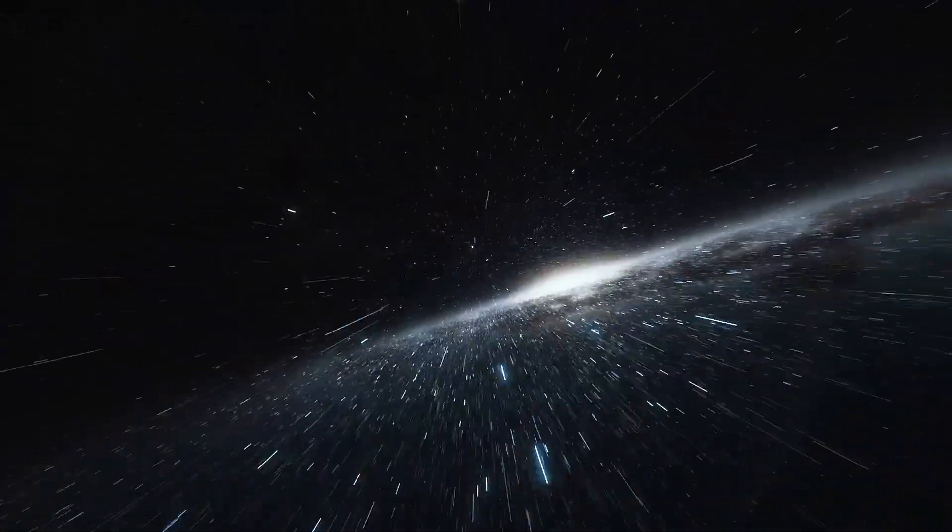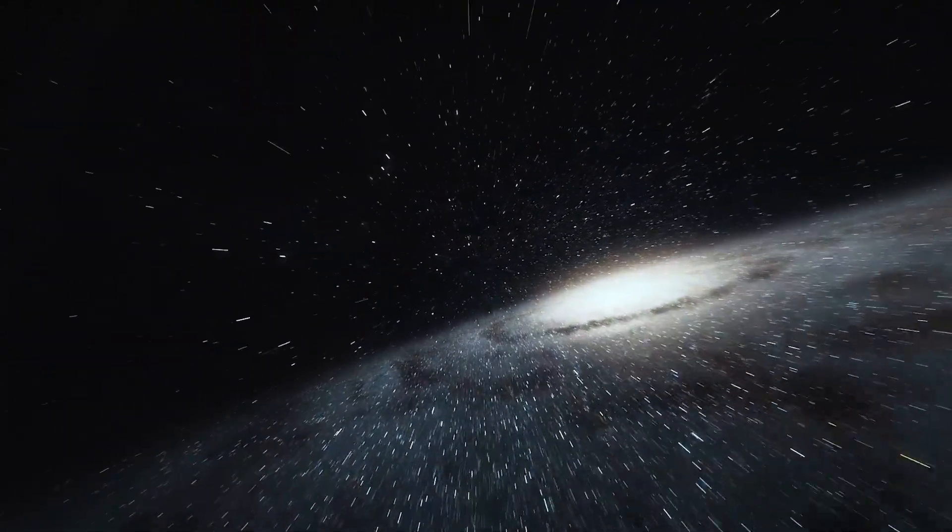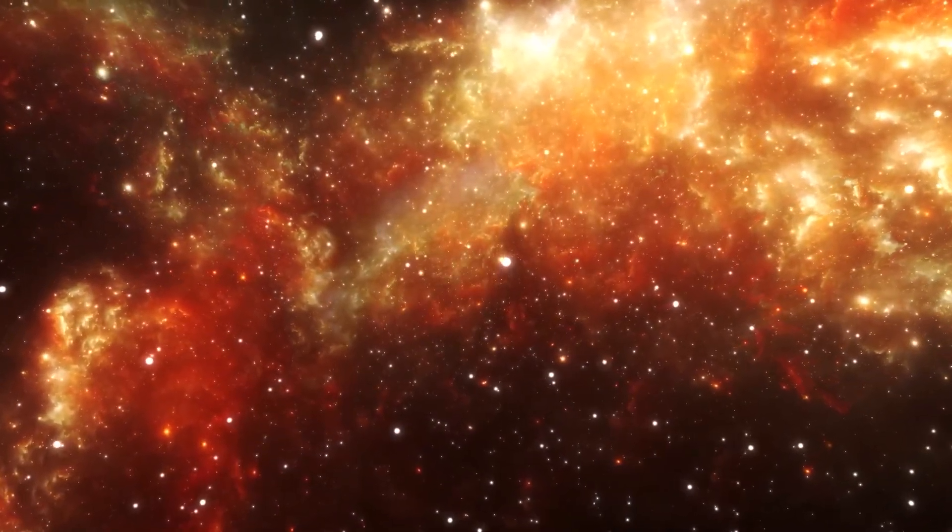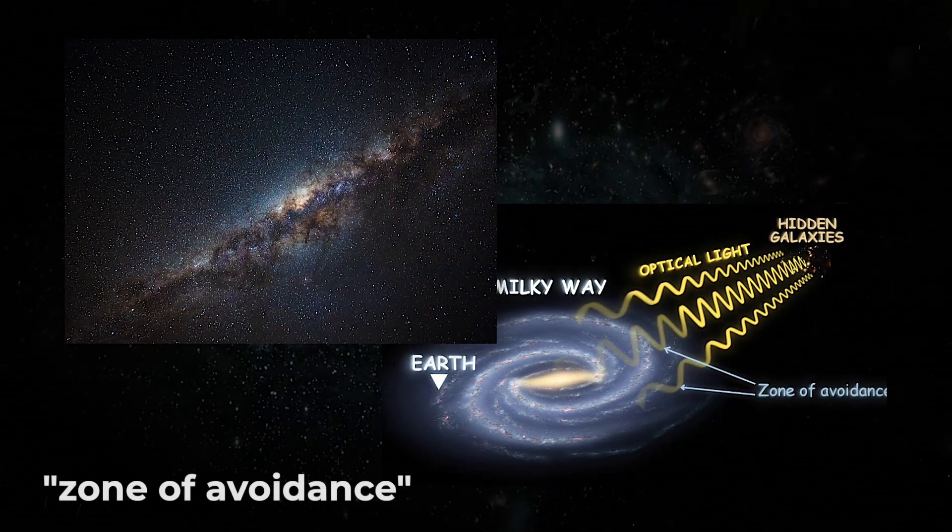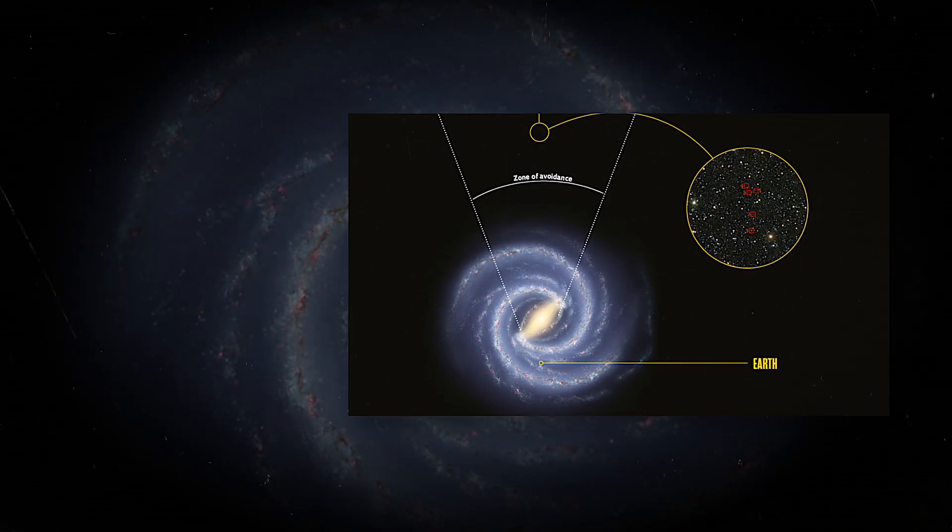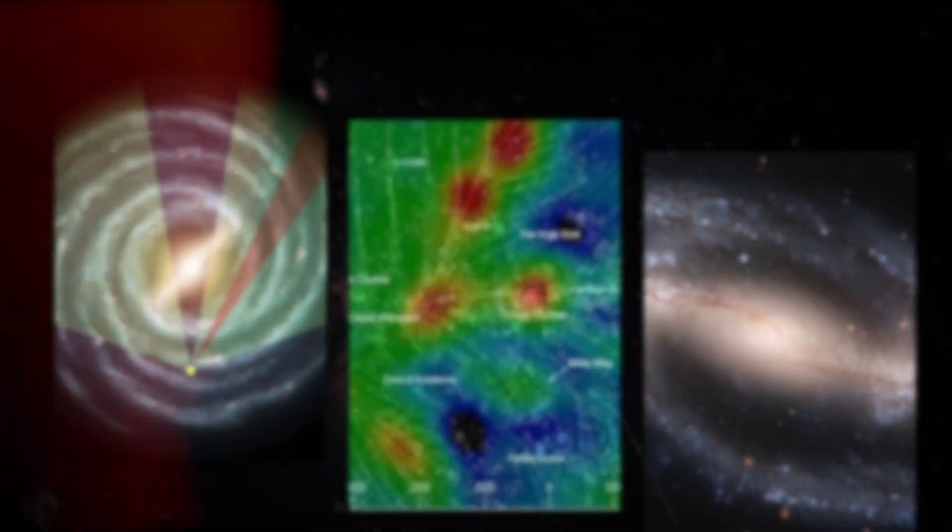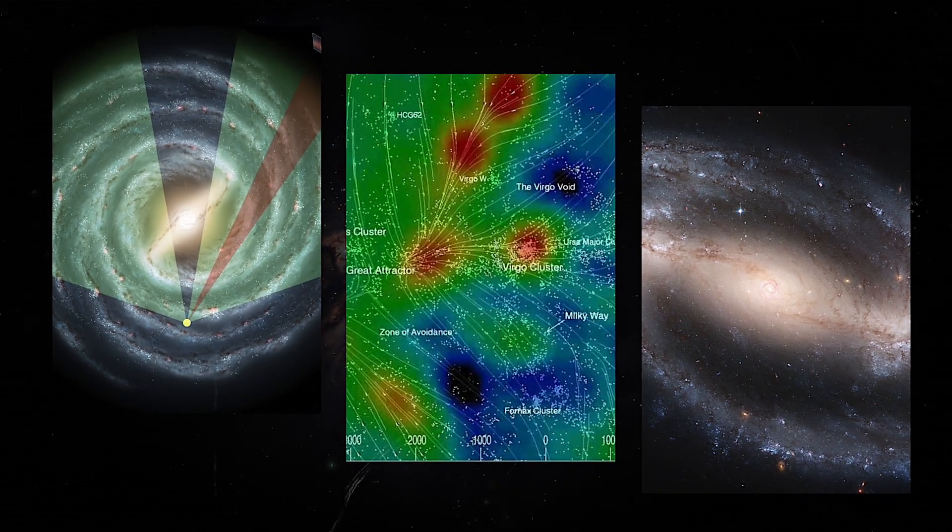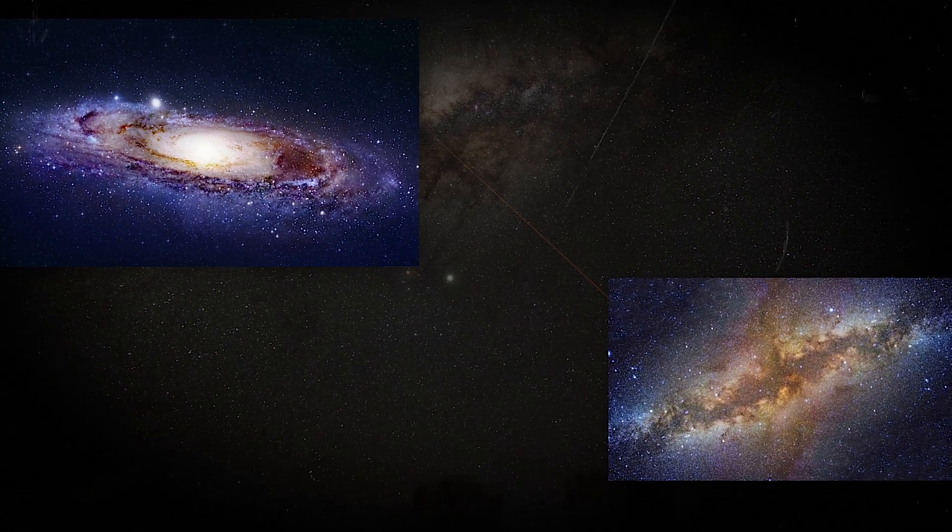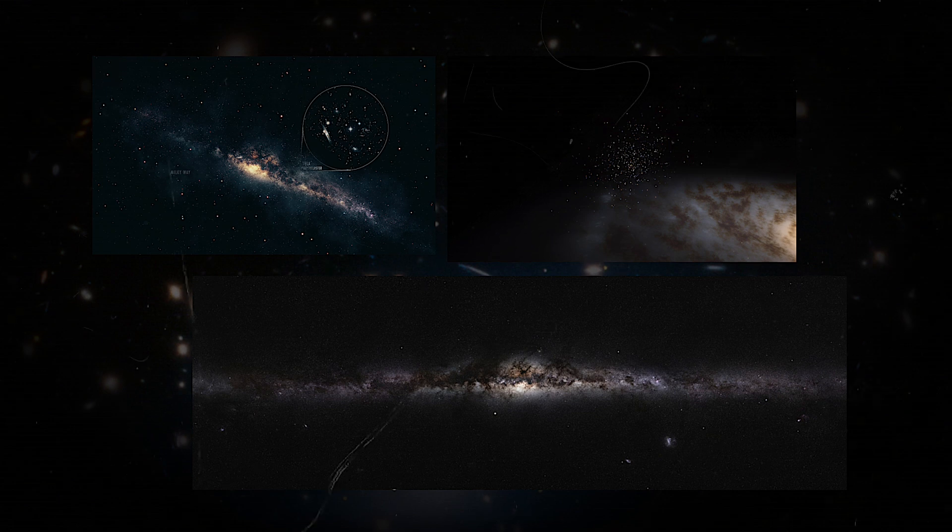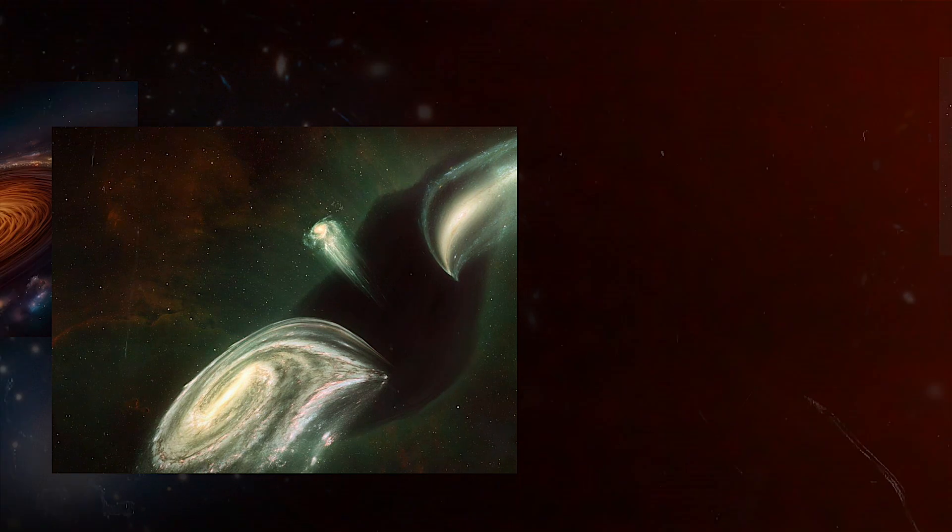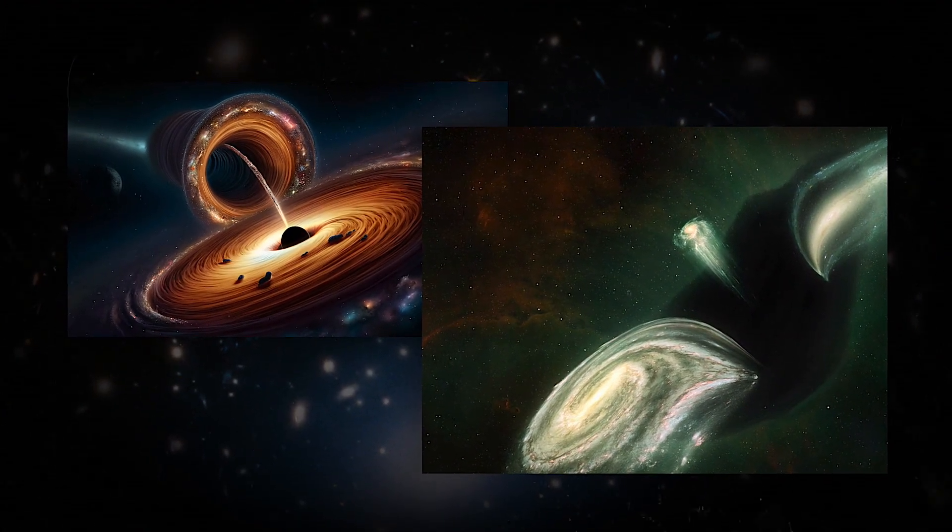Despite the significance of the Great Attractor and its influence on the motion of galaxies, its study faces serious challenges. One of the main obstacles to understanding this mysterious region of space is the so-called Zone of Avoidance. The Zone of Avoidance is an area in the celestial sphere located in the plane of the Milky Way, where the visibility of external star systems is severely hindered by dense clouds of interstellar dust and gas. Our galaxy contains enormous amounts of stars, gas and dust that block the light from more distant objects, making observations in this direction extremely difficult. About 20 percent of the sky is in the Zone of Avoidance, and unfortunately, the Great Attractor falls within this zone, complicating its detailed study.